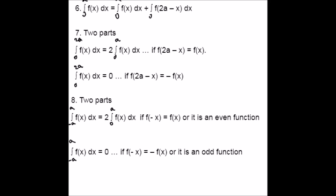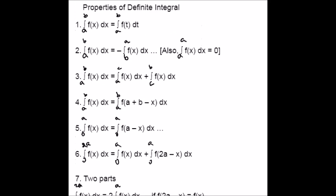So these are the list of the properties of definite integrals. Hope you are clear with these properties. Now let us derive the proof of each of the properties. Proof of the first property — the integral from a to b of f(x) dx equals the integral from a to b of f(t) dt. The proof for this property is not needed, since simply by substituting x = t, the desired output is achieved. Does this make sense to you?